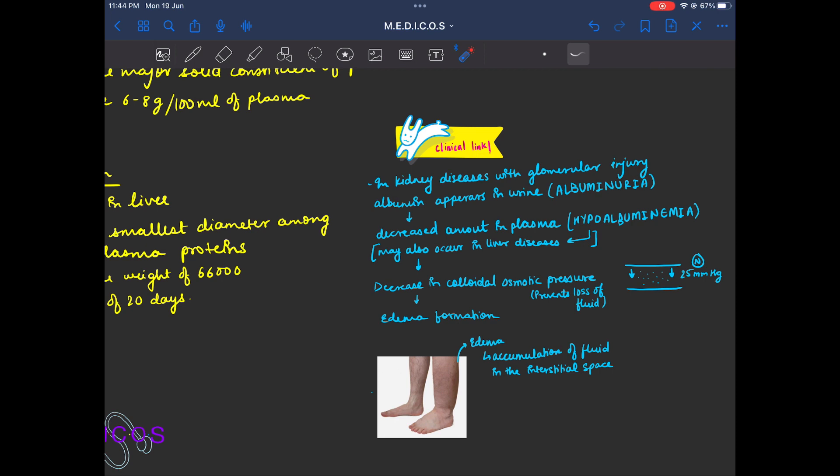In plasma, albumin is excreted, this is why it is lower in liver diseases. Albumin is lower in liver diseases. Therefore, albumin is lower in plasma.